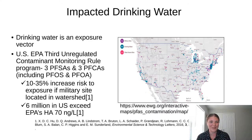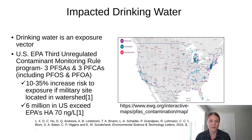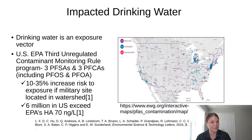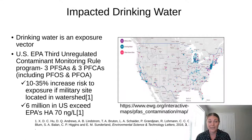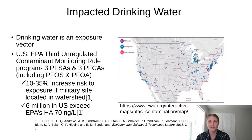Drinking water is a huge exposure vector to PFAS. For the general public, the largest exposure is typically drinking water. As part of the US EPA's Third Unregulated Contaminant Monitoring Rule program, six PFAS were included, and they found that roughly 6 million people in the US exceeded the EPA health advisory of 70 nanograms per liter. Furthermore, if you lived within a military watershed, you had a 10 to 35 percent increased risk of exposure. We want to protect our natural resources, and to do that we need good measurements.